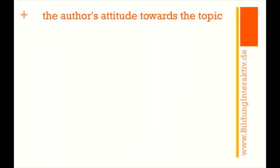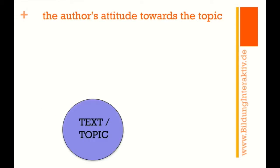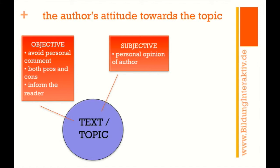When you are confronted with this question, you first have to find proof and evidence in your particular text whether you have an objective author or a subjective author. If your author is objective, he or she will try to avoid any personal comment, give you both pros and cons on the topic, and try to give you as much information as possible so that you, the reader, can come up with your own opinion.